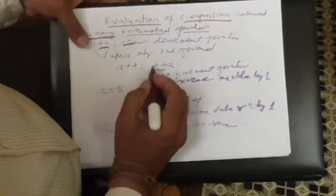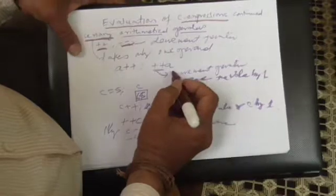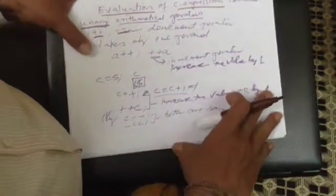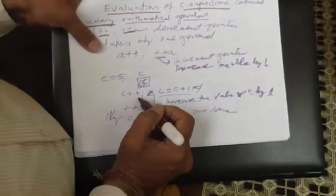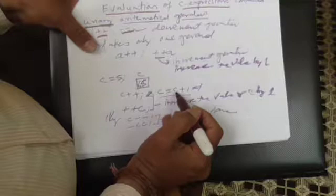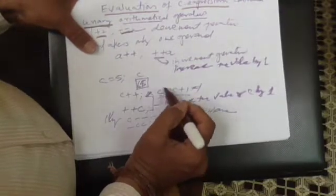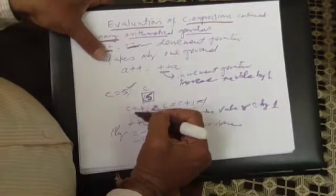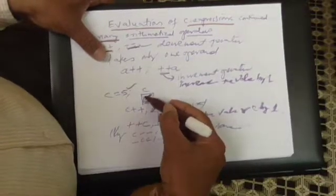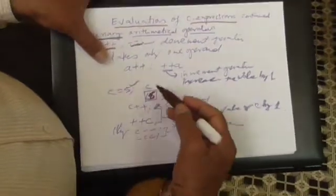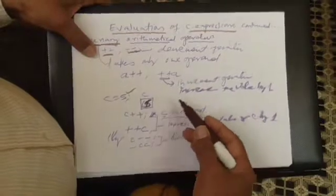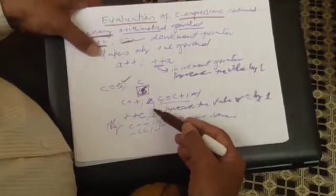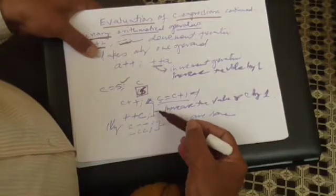Writing A++ or ++A are both the same, as long as they are not part of any expression. If you write C++, the meaning is C is assigned C plus 1 — the new value of C is 1 more than the old value. So if the value of C is 5, writing C++ means 5 is replaced and 6 comes. Whether you write C++ or ++C, as long as it is not part of any other statement, there is no difference at all.